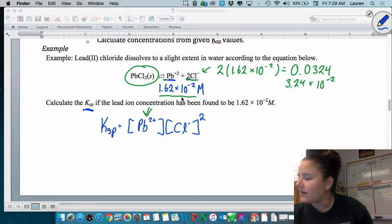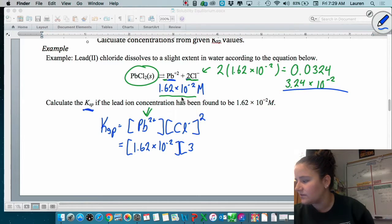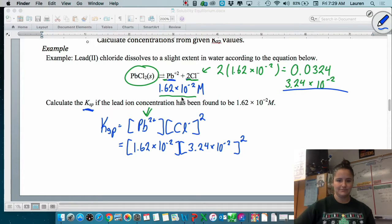So we plug in our values. We have the concentration of lead multiplied by the concentration of chlorine that we just found. And that number is squared. So you plug that in all into your calculator. 1.62 times 10 to the negative 2 times 3.24 times 10 to the negative 2 squared.